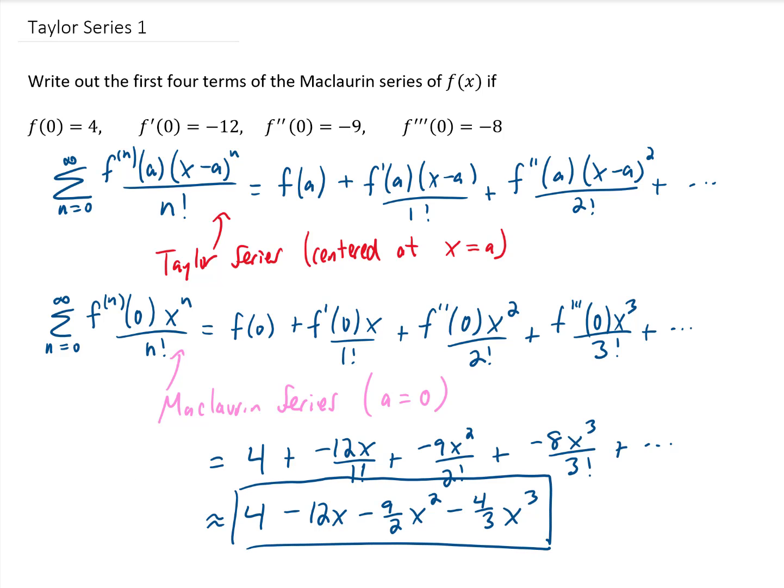And though we weren't given what this actual function was, we have approximated that function using all of these function and derivative values evaluated at x equals 0 that we're given. And this is our result.